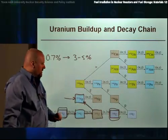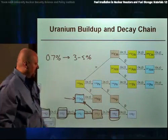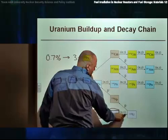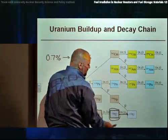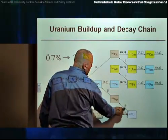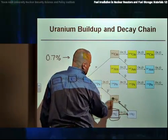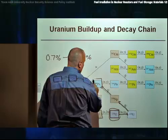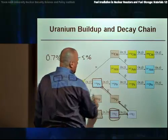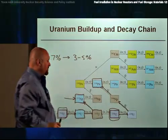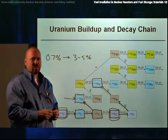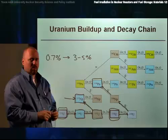As we irradiate this material, U-238, for instance, would absorb a neutron and produce U-239. U-239 would then go through two subsequent beta decays to plutonium-239. Plutonium-239 is the material that is principally used in most nuclear weapons.